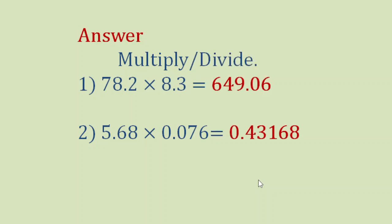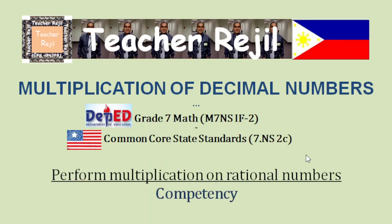For item number 1 the answer is 649.06, and for item number 2 the answer is 0.43168. Did you get the 2 items right? I hope you did.